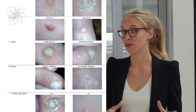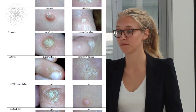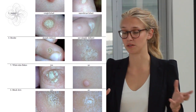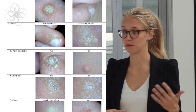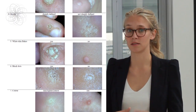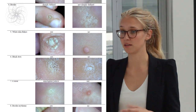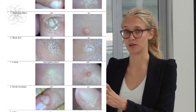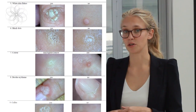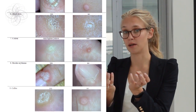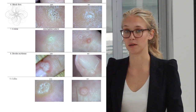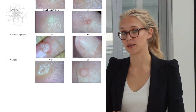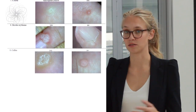Border could be sharply defined or not sharply defined. Also, presence of white skin flakes was tested — you could have either skin flakes or not. The same applies to black dots: either present or not. Color was scored as red or another color. Border erythema, meaning the erythema around the wart, was scored for presence. And lastly, callus — either present or absent.